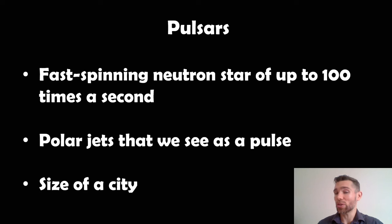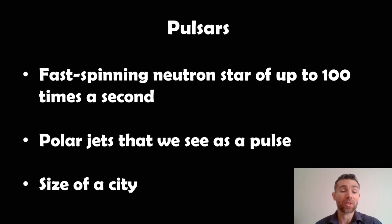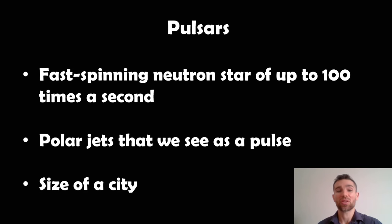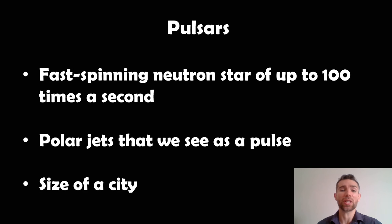Pulsars are very small as well. Because they've collapsed, there's no longer any outward pressure balancing the gravitational force, so they collapse down to basically the size of a city, but they still have the mass of around one to two times that of the sun — so very massive but very small and fast rotating.